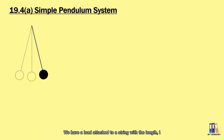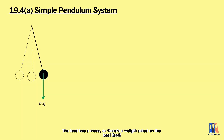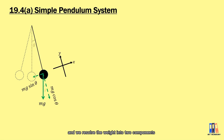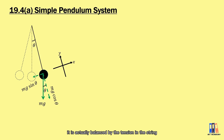We have a bob attached to a string with length L. The bob has a mass, so there is a weight acting on it in the downward direction. We resolve the weight into two components: one along the string and another perpendicular to the string. The component mg cos θ is balanced by the tension in the string, so the net force acting on the bob is mg sin θ, which produces the simple harmonic motion.